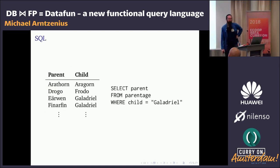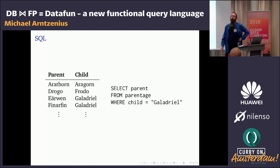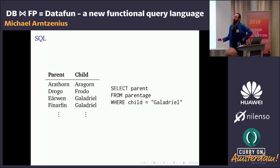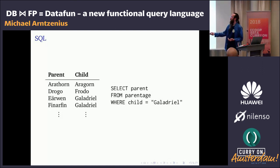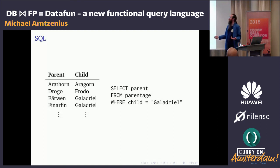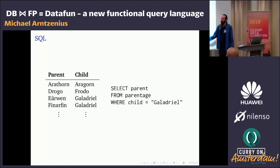What is a functional query language? First off, what's a query language? I'll assume most people are at least passingly familiar with SQL. In SQL, our data looks like tables — each table has columns, and each row represents a fact. For example, the columns might be 'parent' and 'child', so that 'Arathorn is the parent of Aragorn' is one row, and 'Arwen is the parent of Galadriel' is another.